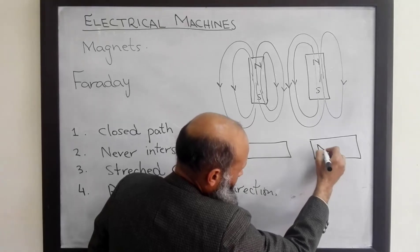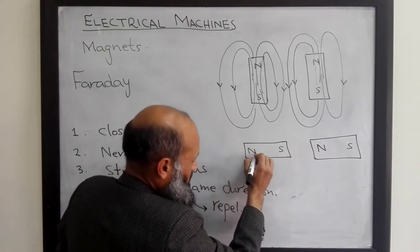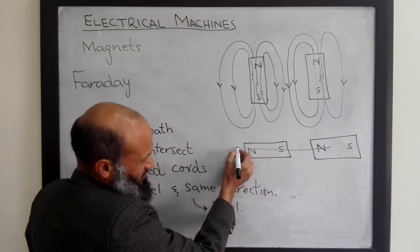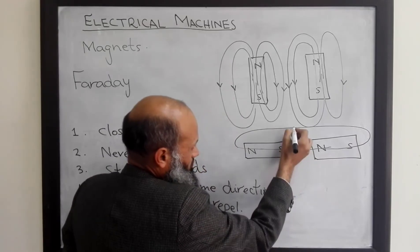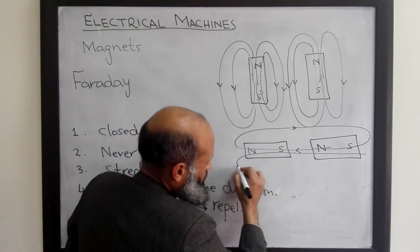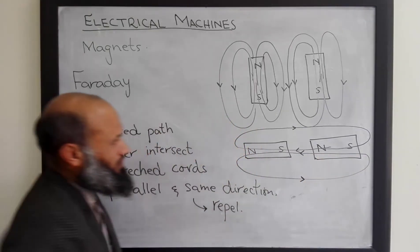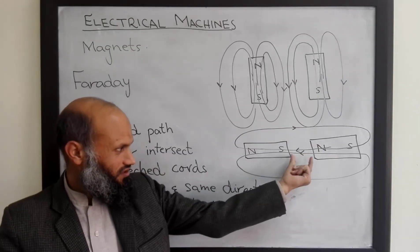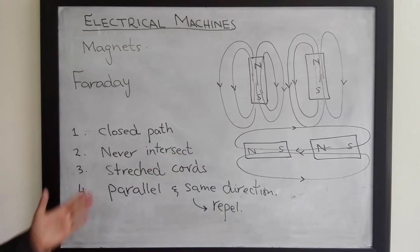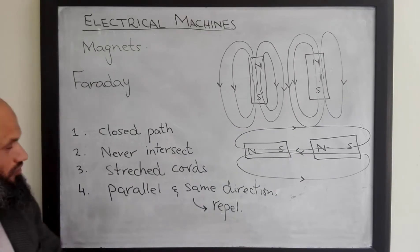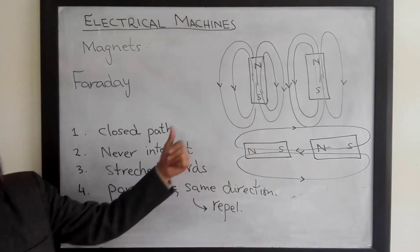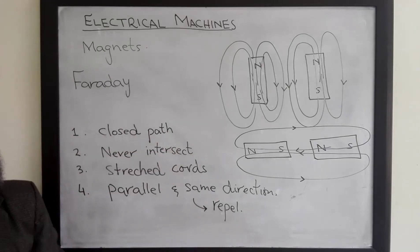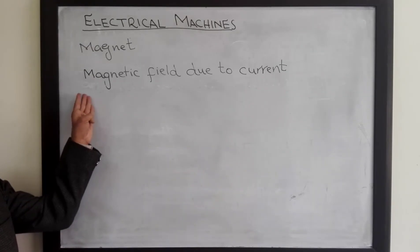Since these lines of flux emerge from the north pole and enter into the south pole, if we have two magnets — north pole facing south pole — the lines of flux emerging from the north pole will enter into the south pole and always follow a closed path. These lines, being like stretched cords, tend to shorten themselves, and therefore these two magnets will attract each other. Again, the point to emphasize is that these lines of flux are not real lines — these are just hypothetical lines proposed by Faraday to explain the phenomena of magnetic fields.